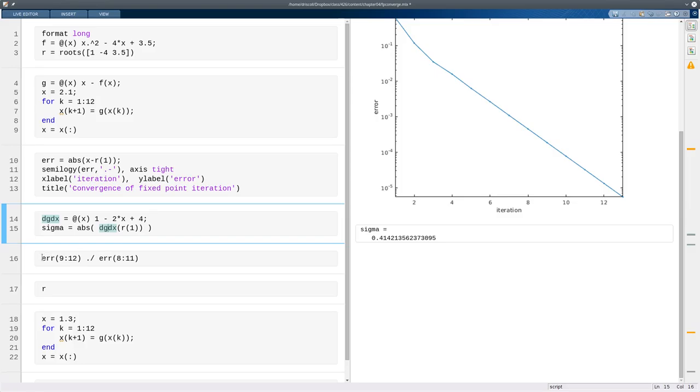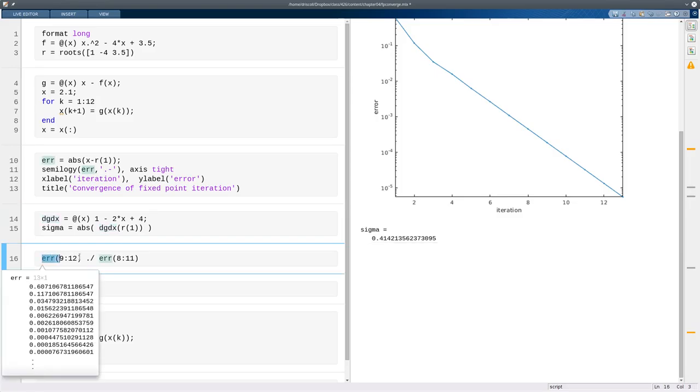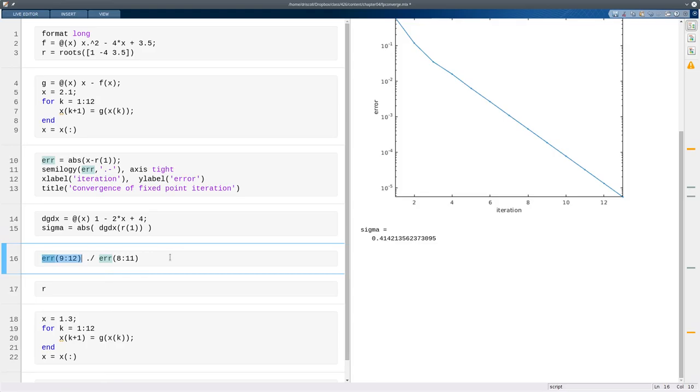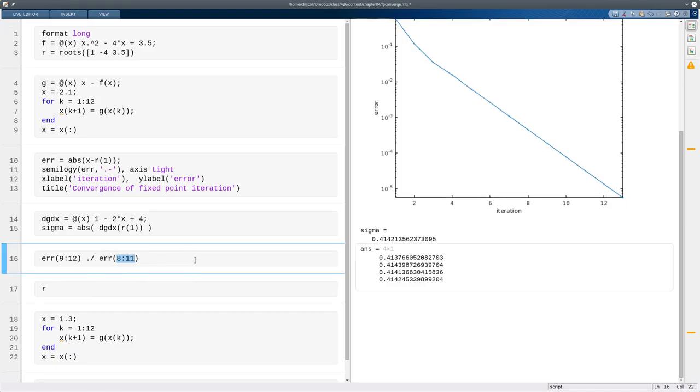Well, we can check that with our observations. So here I'm going to take the 9th through 12th elements of the error sequence and divide those by the 8th through 11th. I'm using element-wise division. So this gives me 9 over 8, 10 over 9, and so on. That's the ratio that should be converging to sigma in the limit, and that's what we see. So it's all very explainable.